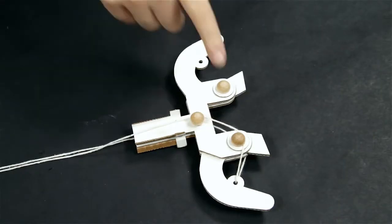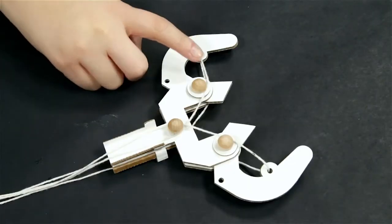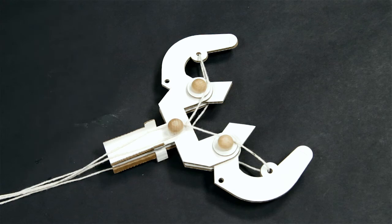Step 13: Pass the string over the dowel in the center of the claw on both sides. Step 14: Repeat steps 10 and 11 for the other string on the other side of the claw.